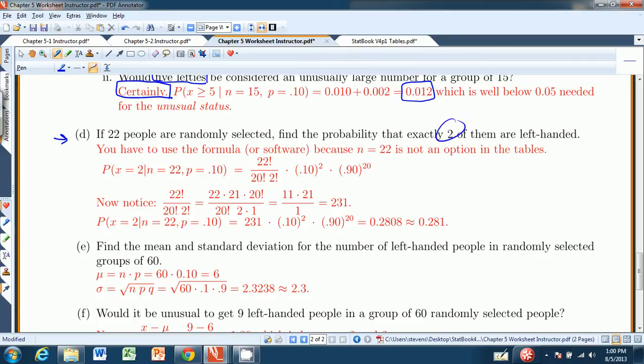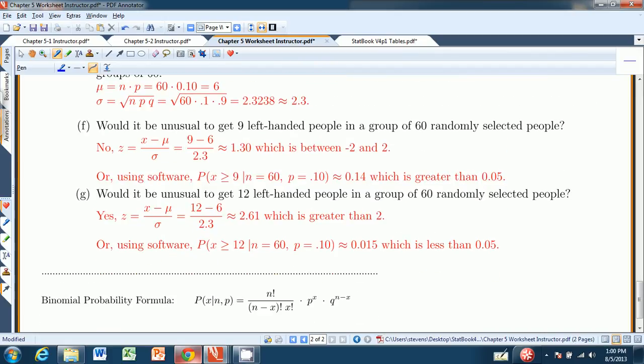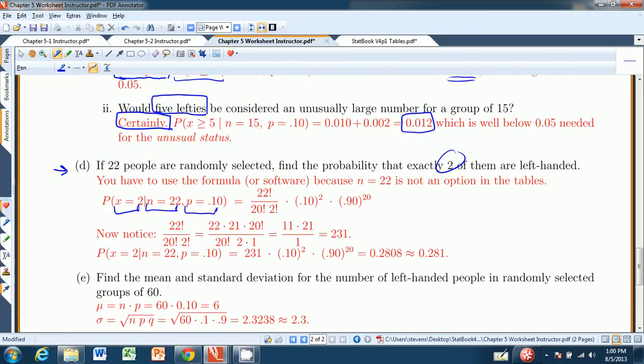What is the probability that exactly two of them are left-handed? So what we're looking for is the probability that x equals 2 when n is 22 and p equals .10. So that formula, and again, it's down here. There's n factorial over n minus x factorial x factorial times p to the x times q to the n minus x. So here is n factorial. Here's n minus x factorial. There's x factorial. P to the x, q, remember p and q always add up to 1, to the n minus x.